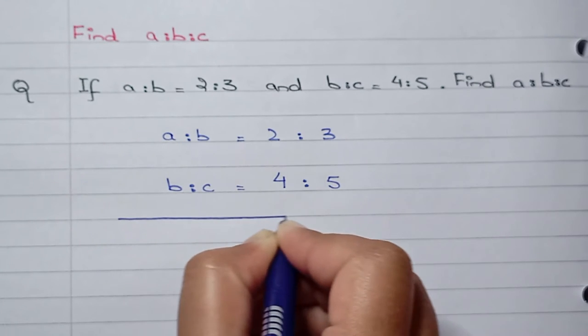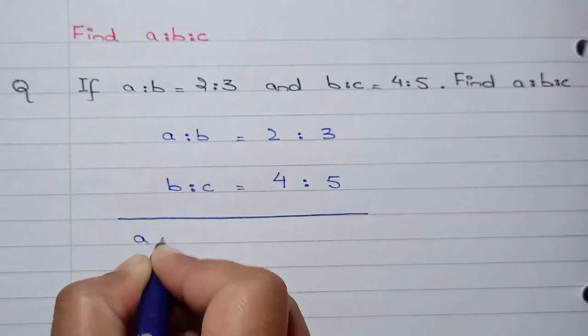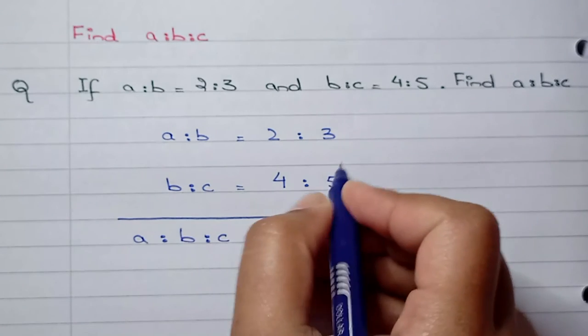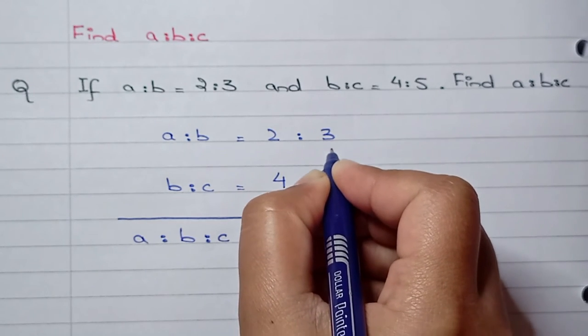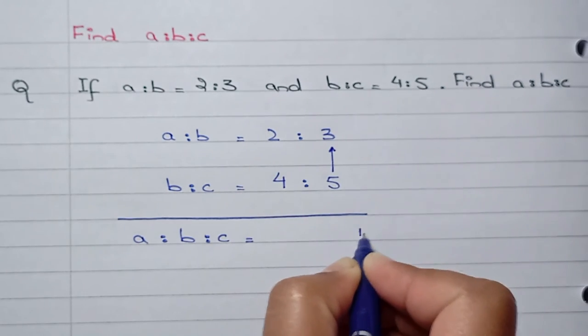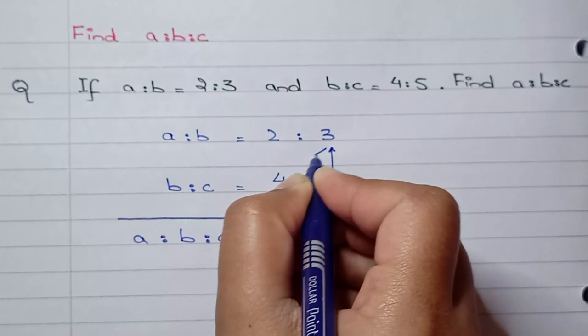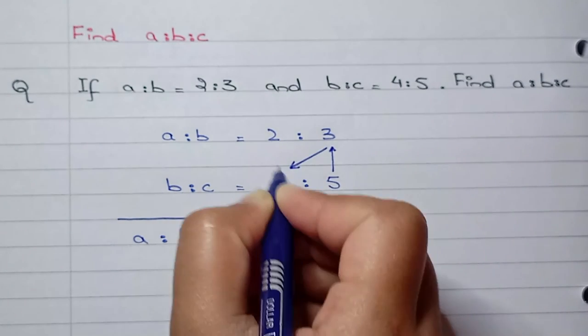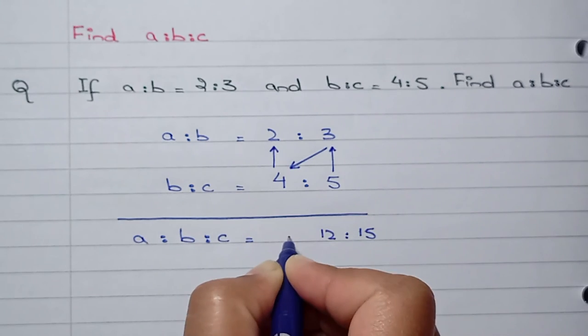So in order to find A ratio B ratio C, what we need to do, we need to multiply this number with this. 5 times 3 is 15 and then 3 times 4 is 12 and then 4 times 2 is 8.